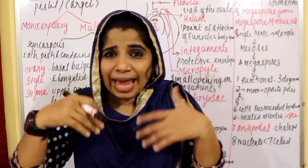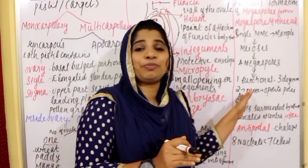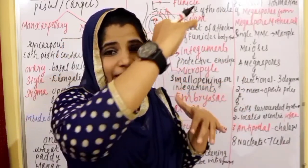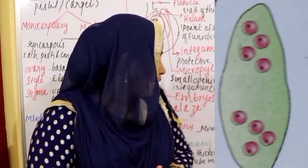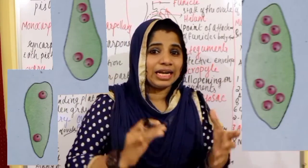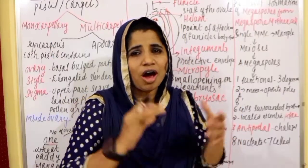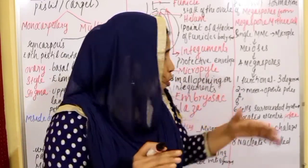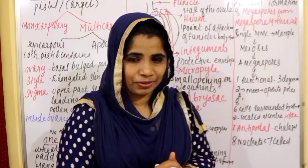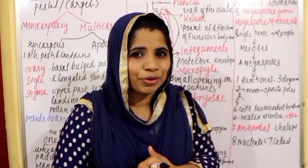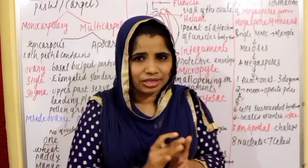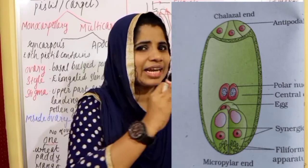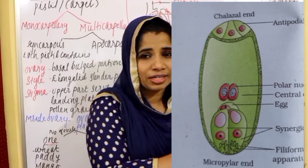Then, through mitosis, the megaspore produces four nuclei, and then divides again to produce eight nuclei. In the center of the embryo sac, two nuclei are present — these are called the polar nuclei.